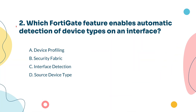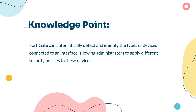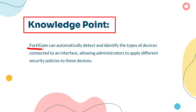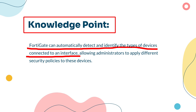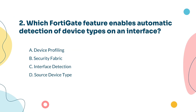Question 2: Which FortiGate feature enables automatic detection of device types on an interface? FortiGate can automatically figure out what kind of device is connected to its interface. The feature that does this is called source device type, and it helps in applying the right security policies based on the detected device. The source device type feature is used to automatically detect and identify the types of devices connected through an interface for more accurate security control — therefore, Option D is correct.